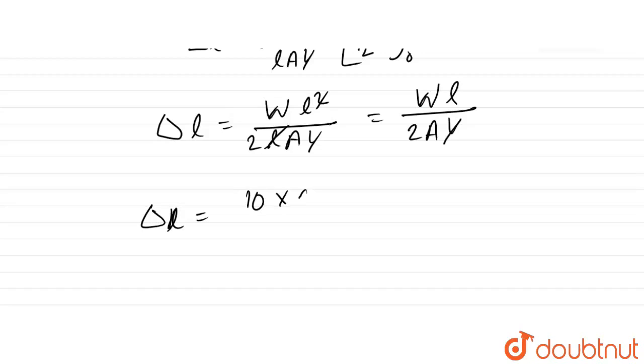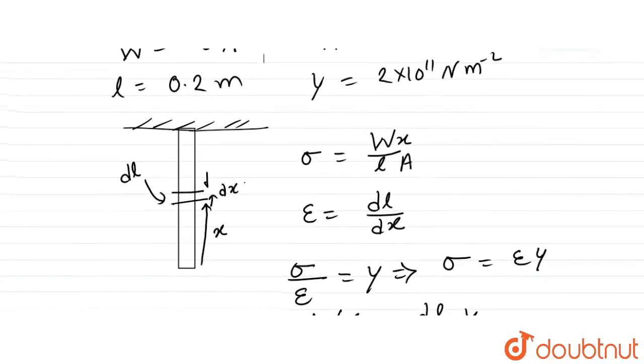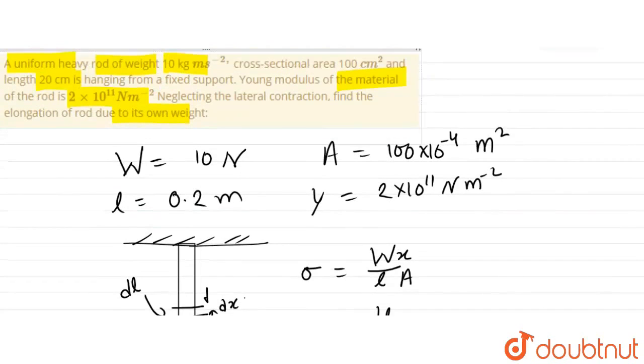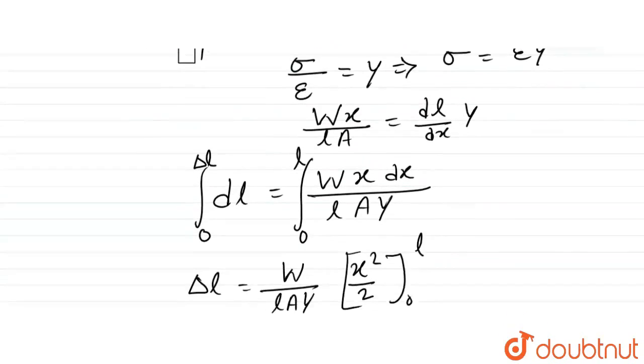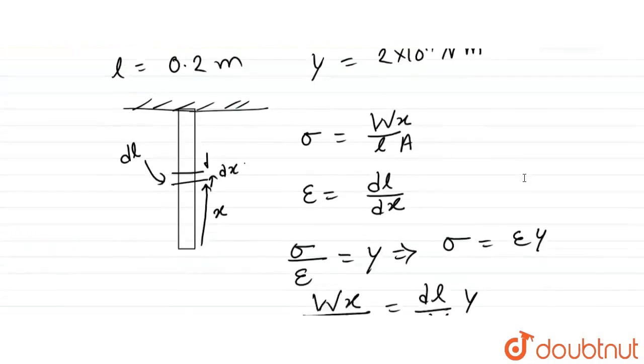Now substituting the values: W is 10 N, l is 0.2 m, cross-sectional area A is 100×10^-4 m², and Young's modulus Y is 2×10^11 N/m².